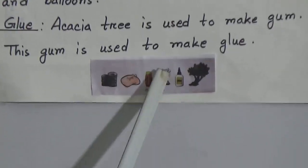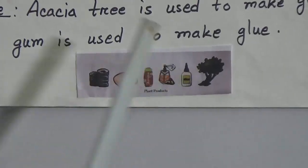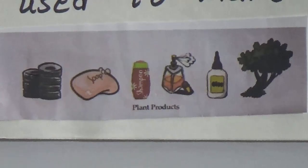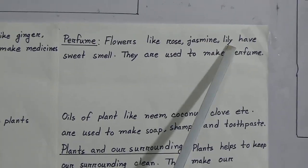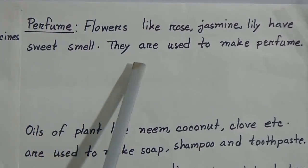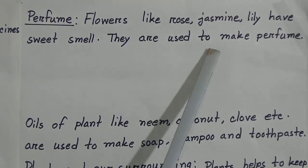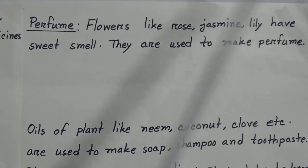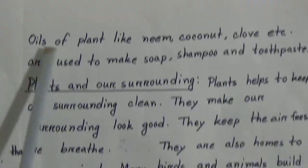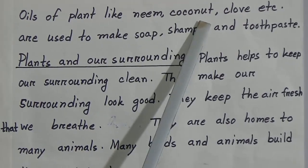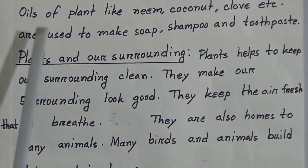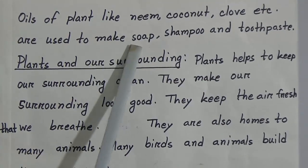Next point is perfume. Flowers like rose, jasmine and lily have a sweet smell; they are used to make perfume. Oils of plants like neem, coconut and clove etc. are used to make soap, shampoo and toothpaste.